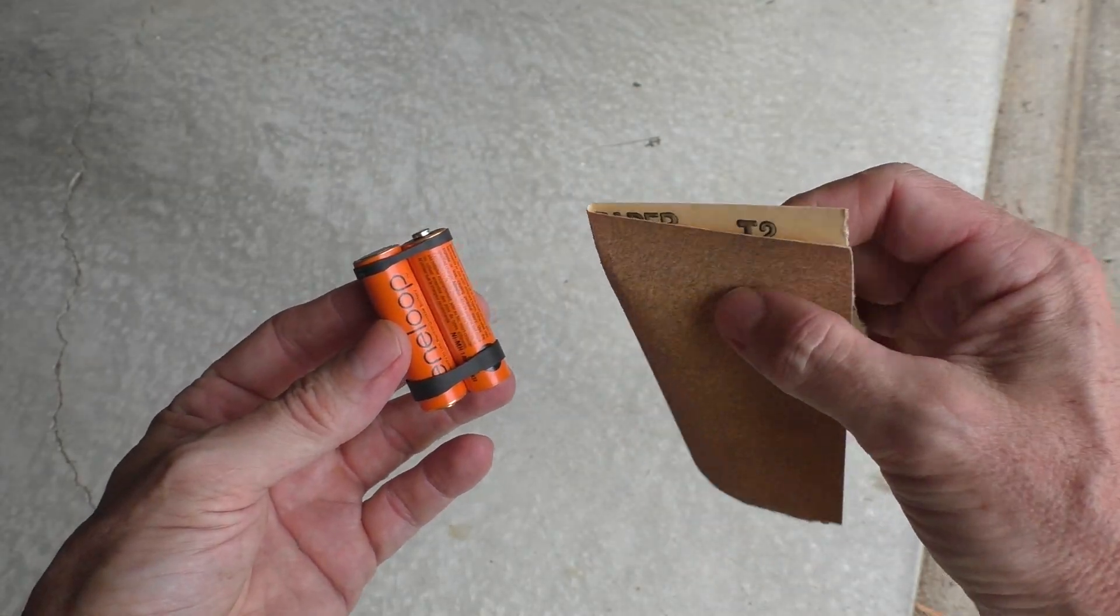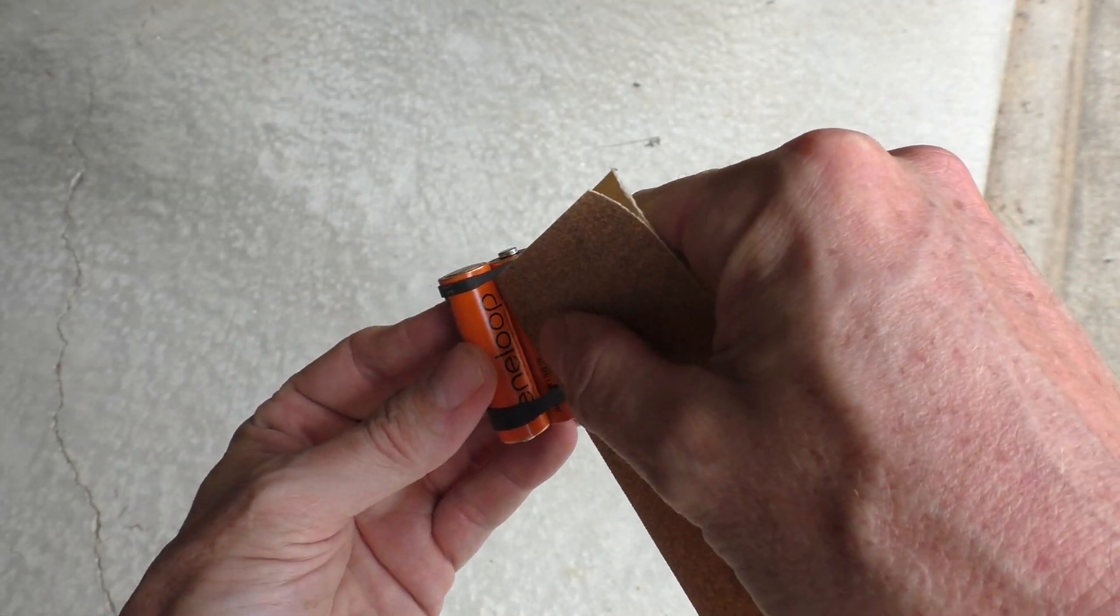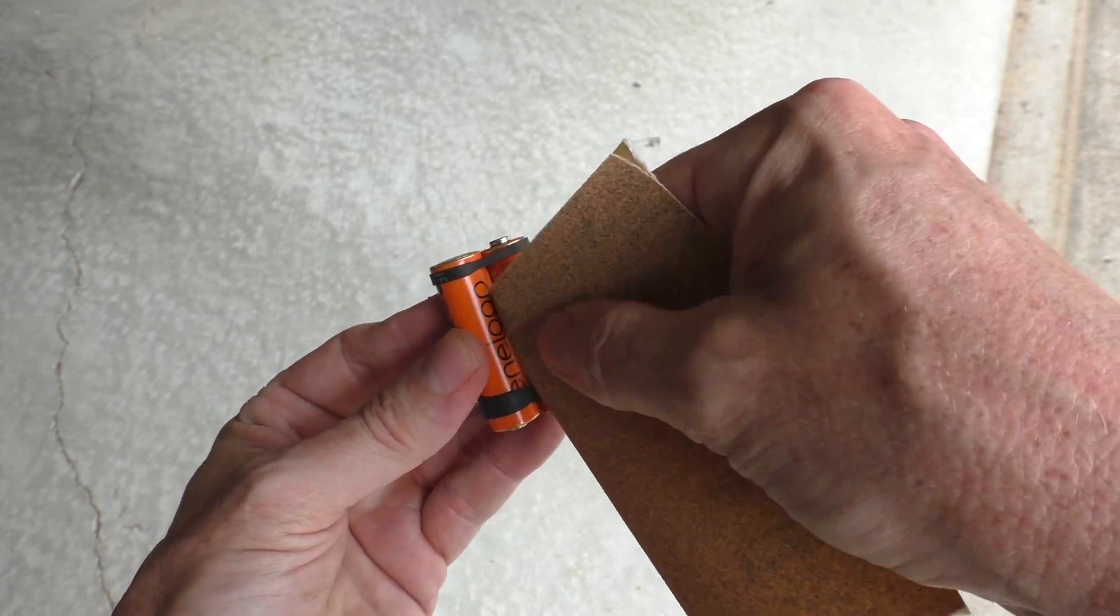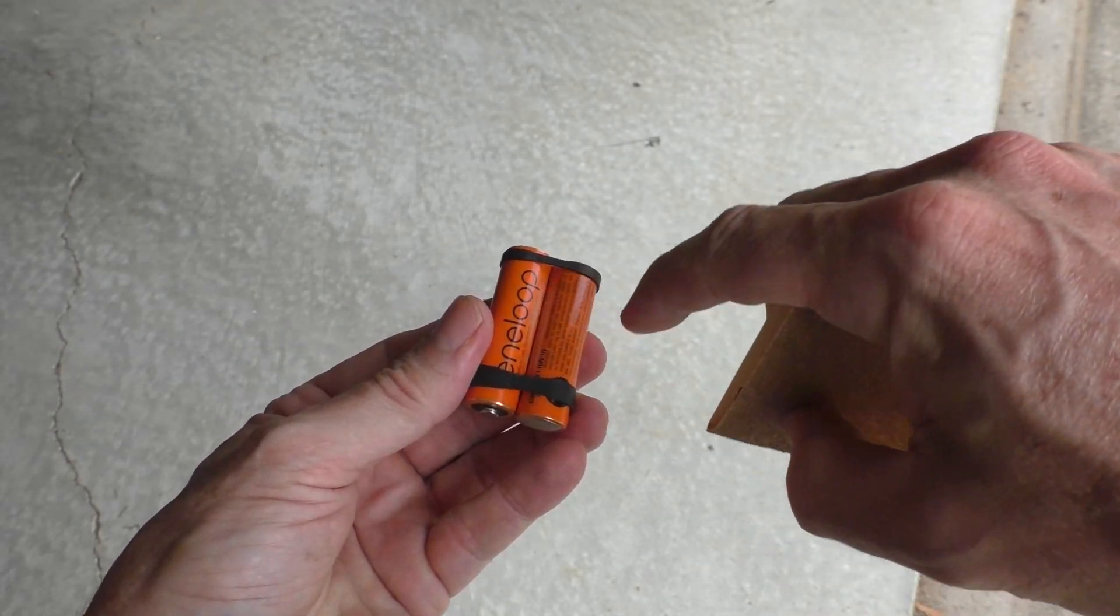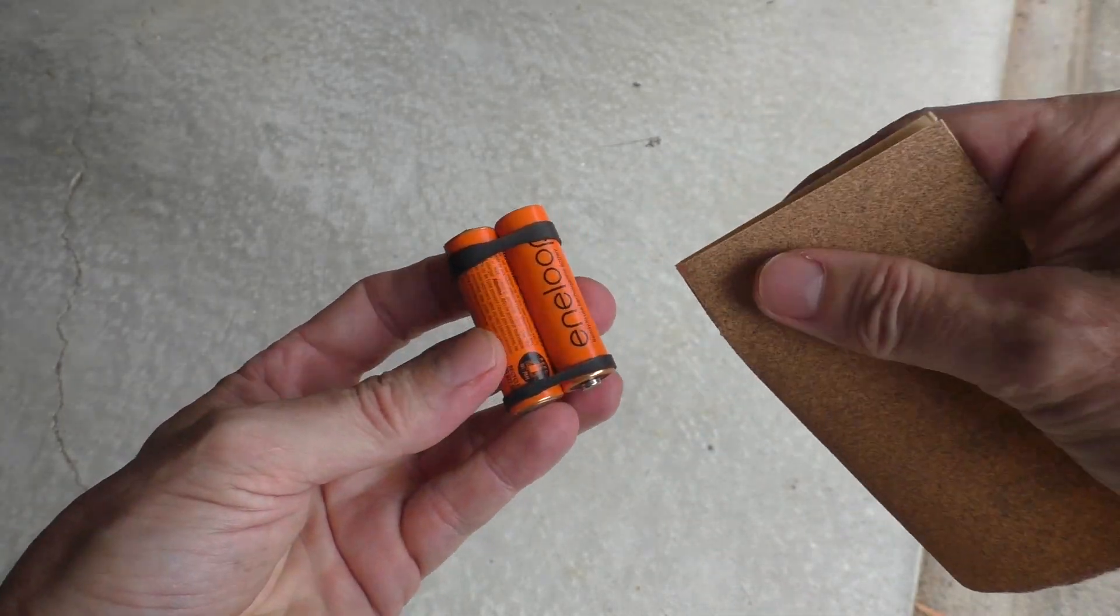Now I'm going to take this piece of sandpaper and kind of rough up the plastic sheathing of the batteries because I'm going to glue it together and it'll help the glue stick better.